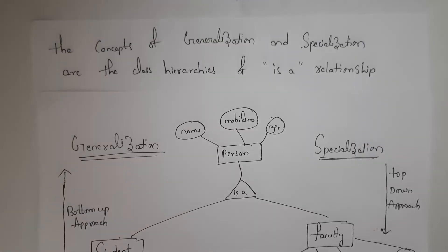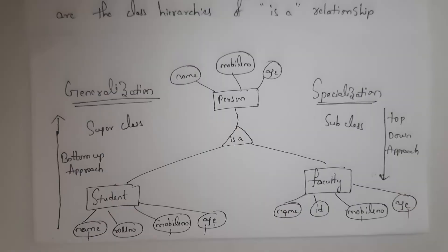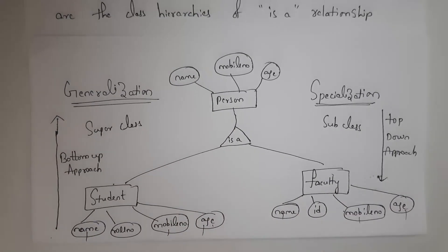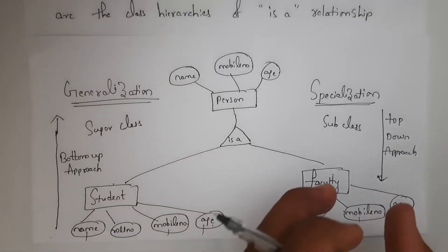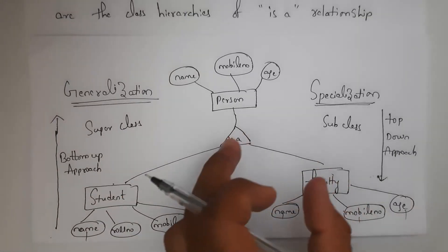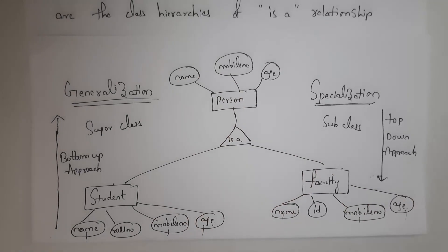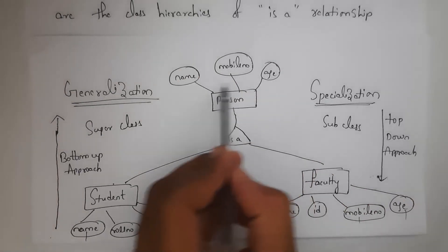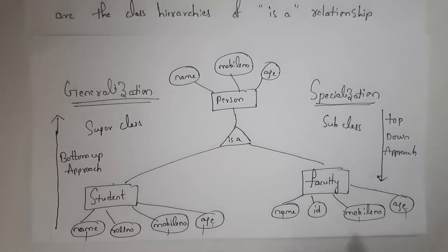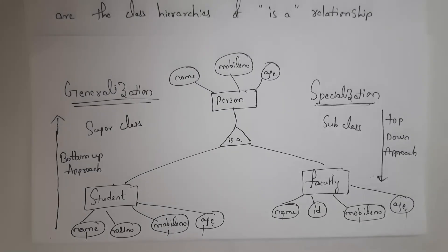We call generalization and specialization together as class hierarchies with an IS-A relationship. A class hierarchy contains a super class and sub classes. In generalization, student and faculty are sub classes and person is the super class. In specialization, person is the higher-level entity and student and faculty are the sub classes. So if you get an exam question like 'explain class hierarchies,' class hierarchies are nothing but generalization and specialization with an IS-A relationship.